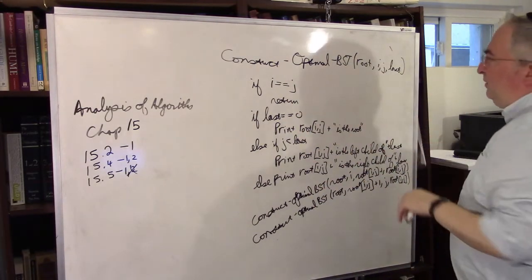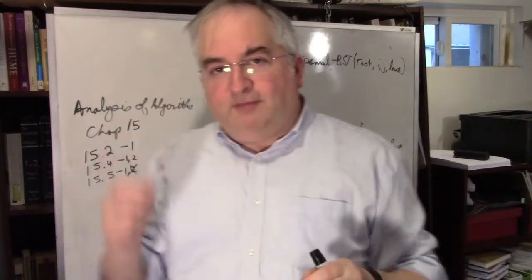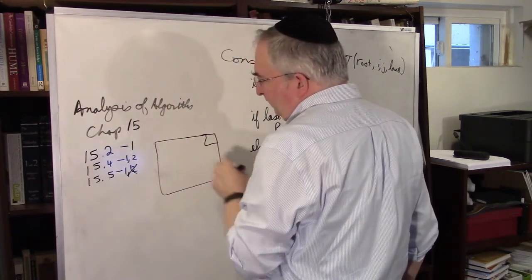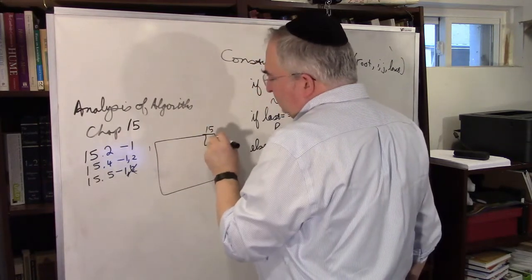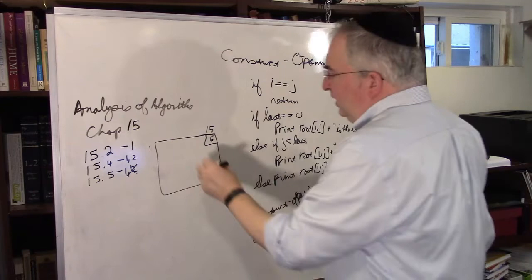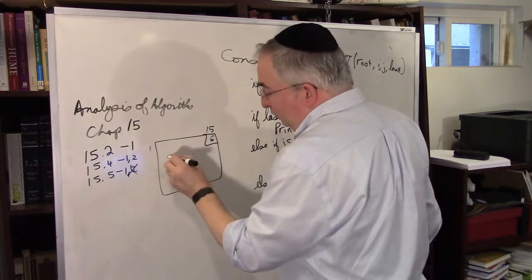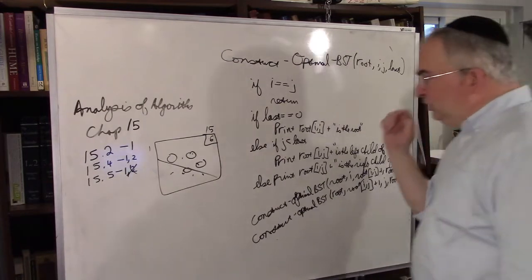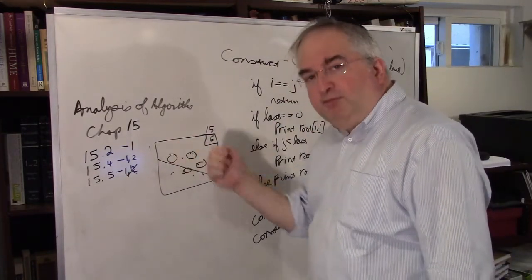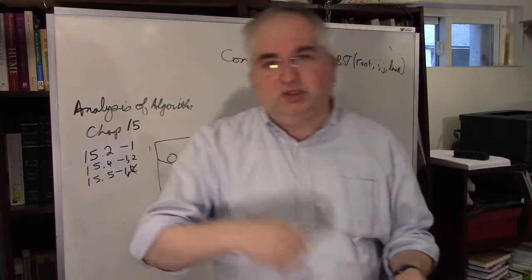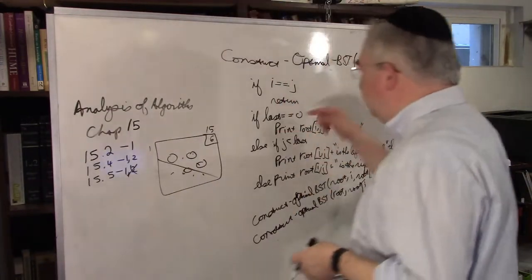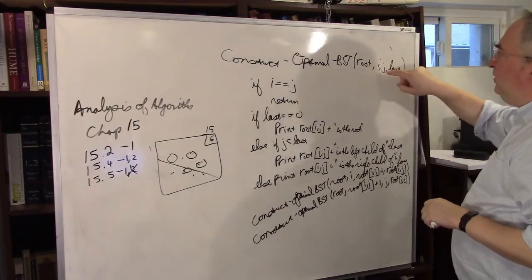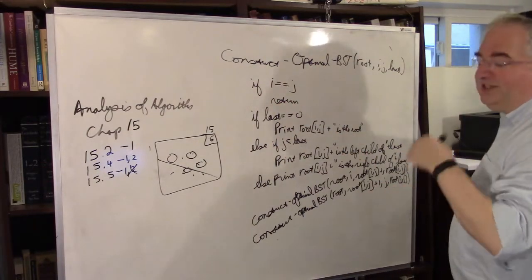Construct the optimal binary search tree. If I give you what the root of everything is from the root matrix — it tells you 6 is the root for the 1-to-15 position. Each number in the matrix is some root value. Basically what they want you to do is look at this matrix and print out what's the root, what's the left child, what's the right child of each node.